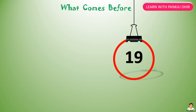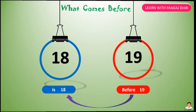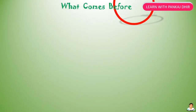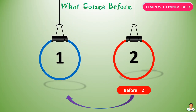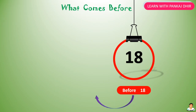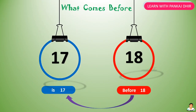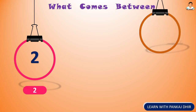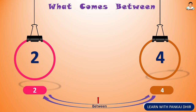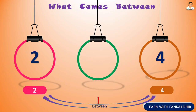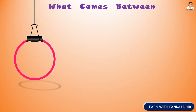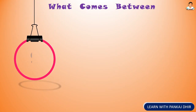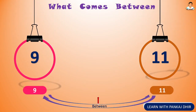Before 19 is 18. Now, what comes between these two numbers? 2 and 4 — between inke beech kaunsa number aata hai? That is 3. What comes between 17 and 19 is 18.